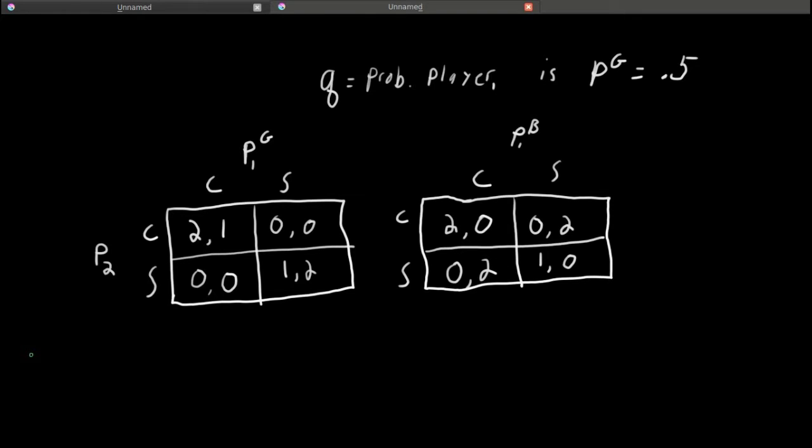But player 1's action space is actually augmented. It now actually has 4 actions. And I'm going to go through and list them all. The key here is to realize that player 1's action has to specify what player 1 will do for both types.